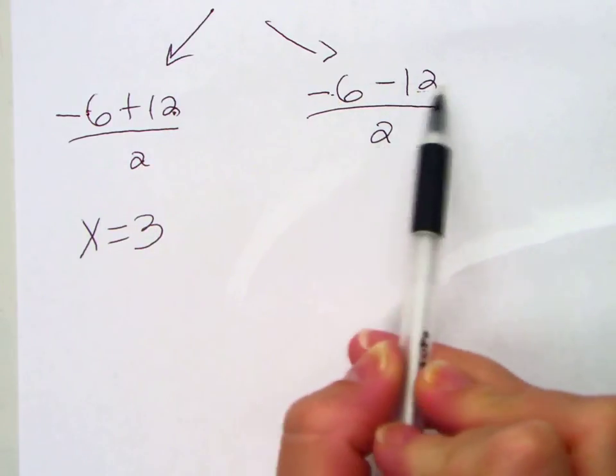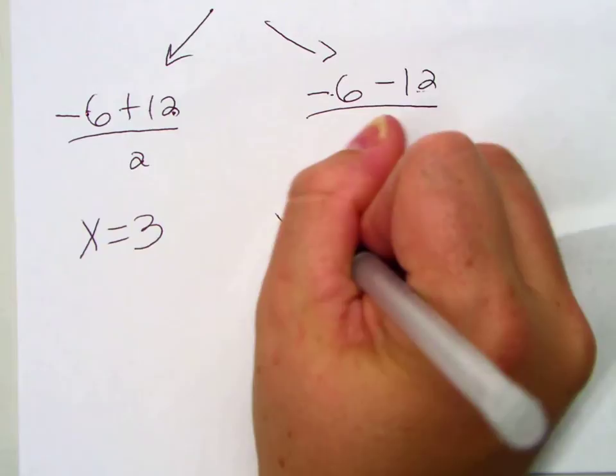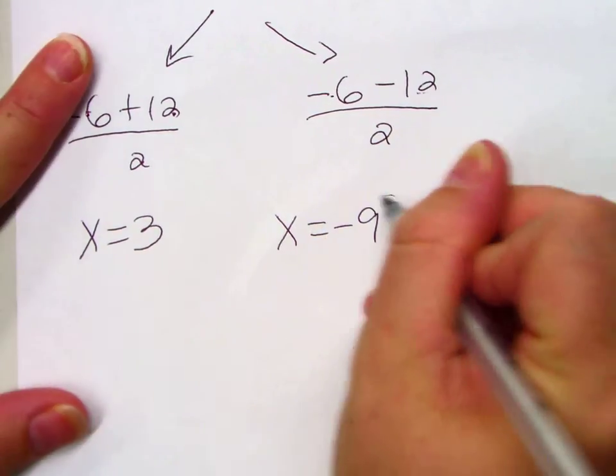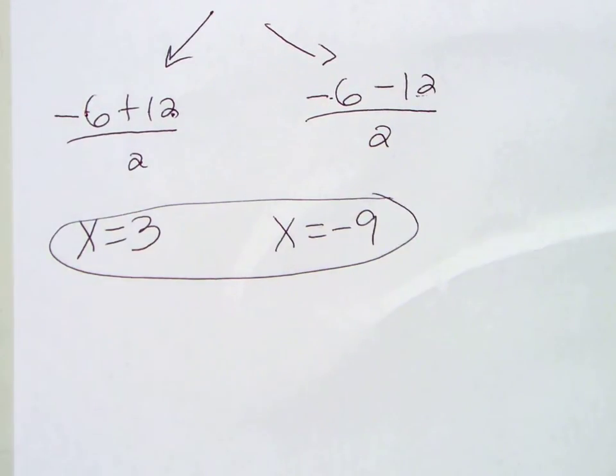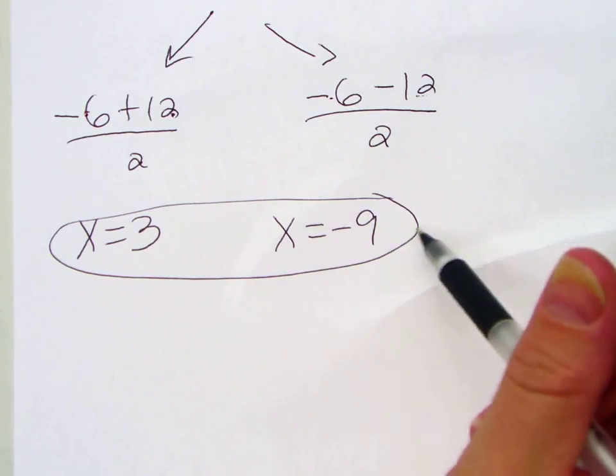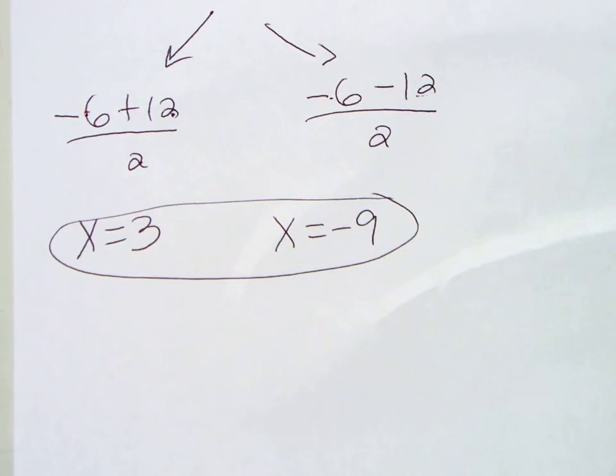Here we get negative 18 over 2, negative 9. And don't forget your x equals. Remember, we're solving for x. This is a factorable problem. We got nice answers. I'm just going over the process with you.